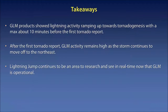Takeaways. GLM products showed lightning activity ramping up towards the time of tornado genesis with about a 10-minute lead time before the first tornado report. As the storm continued to gain strength, the flash areas started to decrease until hitting the minimum size of 64 square kilometers, maintaining those small sizes through the lifetime of the storm. After the first tornado report, the GLM activity remains high — as it continued to produce tornado reports for about the next 20 minutes, it maintained high flash extent density and small flash size continuing into Amarillo's area.